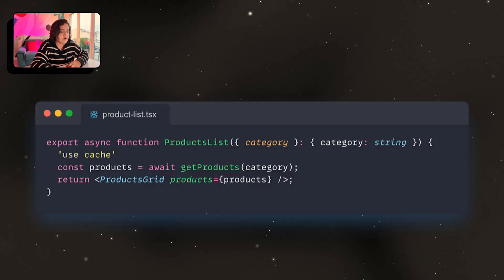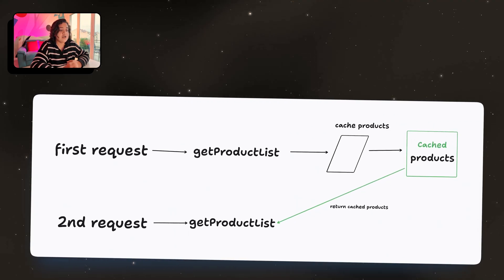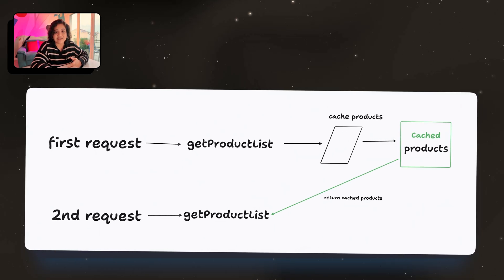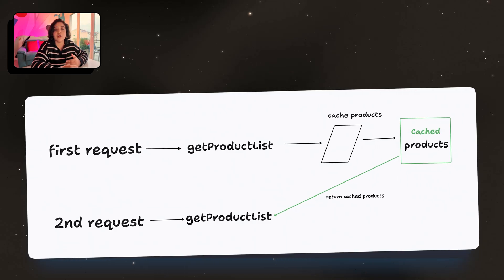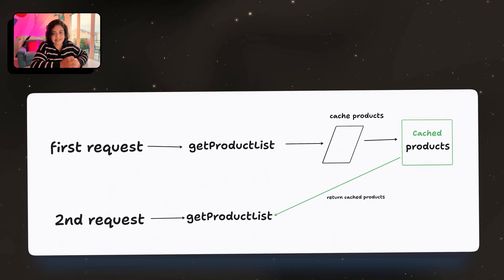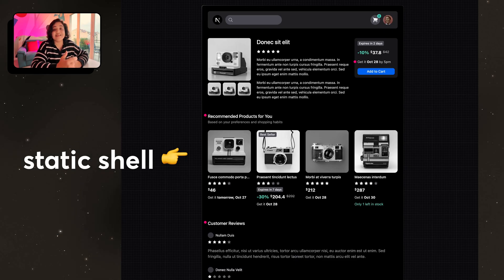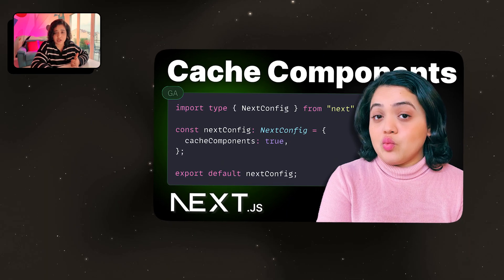For example, if you have a component called ProductList that fetches a list of products and displays a grid, you can cache this function by marking it as 'use cache'. When you add the directive, the result of that function is stored and reused across requests. So if multiple users hit the same page, Next.js and React won't re-render or re-fetch — they'll just return what's cached. This pairs well with partial pre-rendering: serve the static shell instantly, then stream in the cached pieces of dynamic content. I have a separate video covering 'use cache' in depth, so check it out if you're interested.